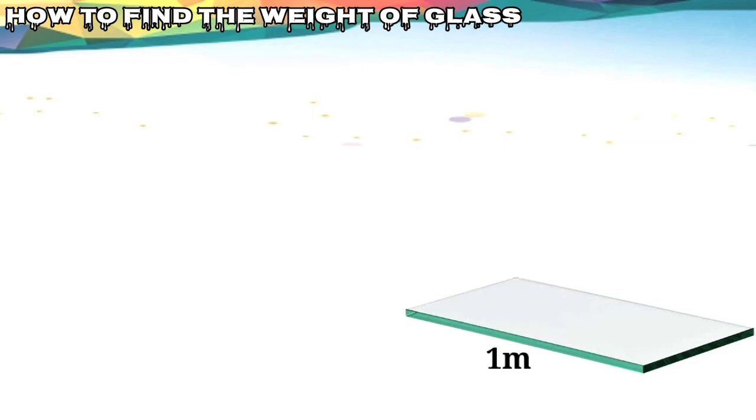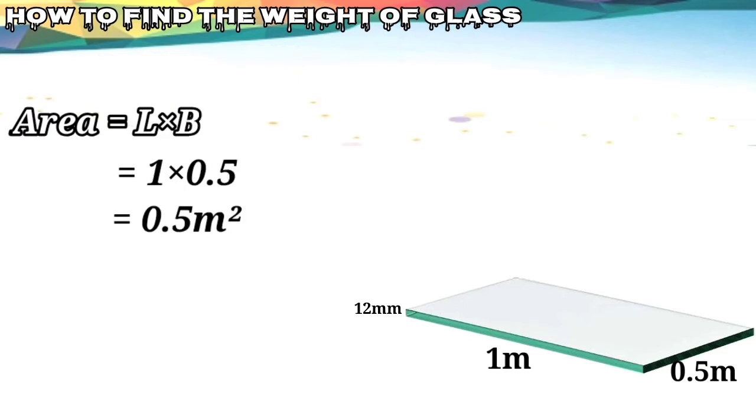Suppose the length of the glass is 1 meter and the breadth is 0.5 meter. If you multiply 1 with 0.5, you get the answer 0.5 meter square. That is the area for that particular glass.